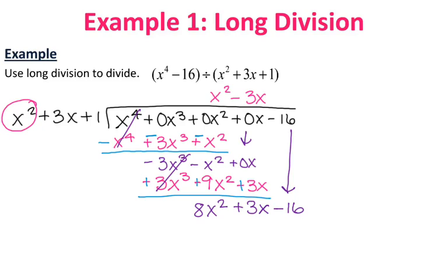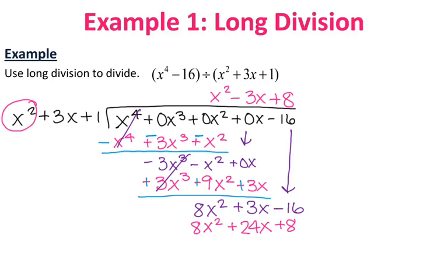The process repeats again. What times x squared gives 8x squared? That's 8, so I put plus 8 on top above the constant term — we've reached the end, so this is the last round. I multiply 8 by x squared to get 8x squared, 8 times 3x is 24x, and 8 times 1 is 8. I subtract by drawing the line and changing the signs. The 8x squared terms cancel, leaving a remainder of negative 21x minus 24.